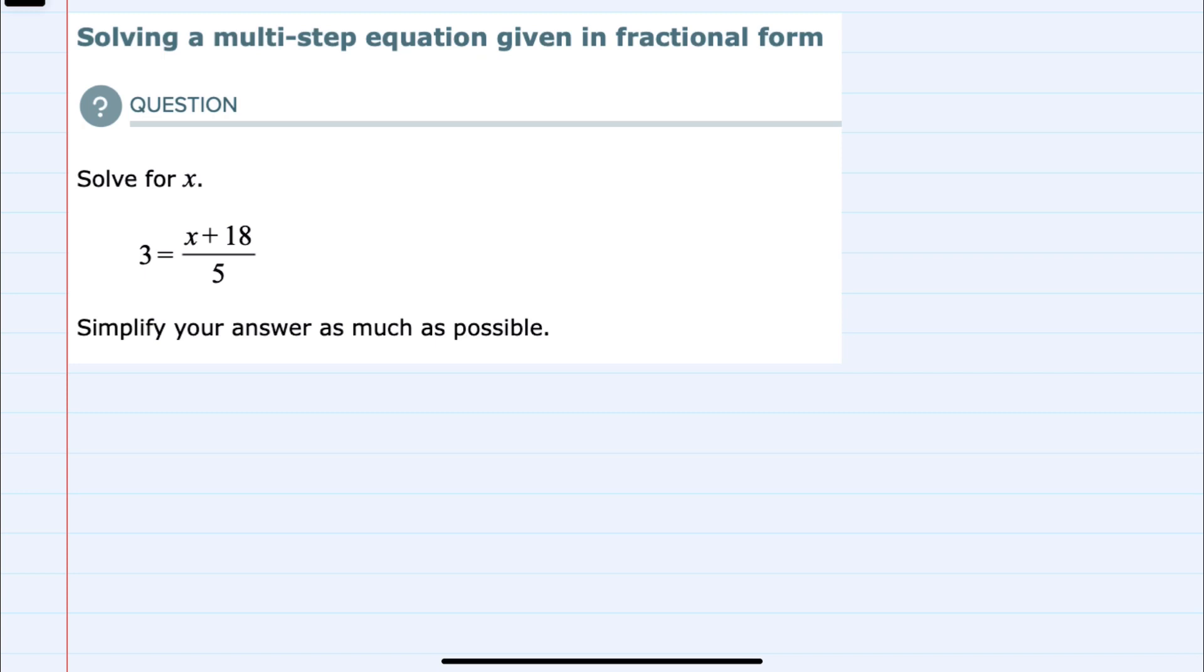Here we only have one denominator, 5, so I can multiply the left hand side of the equation by 5 and multiply the right hand side of the equation by 5.